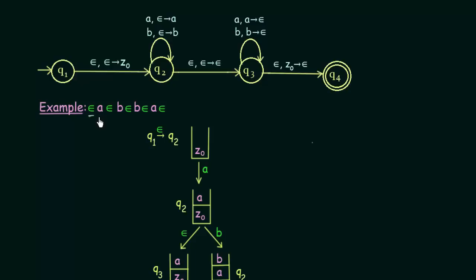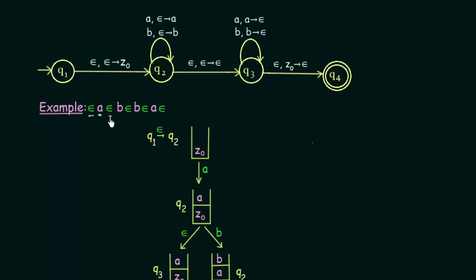The next input is A. In state Q2, if we get input A, we don't pop anything but just push A into the stack, remaining in Q2. After reading A, the next symbol could be either epsilon or B — our machine doesn't know which. We will consider both cases. First, let's see what happens if we read an epsilon. In Q2, reading epsilon means we go to Q3 without pushing or popping anything from the stack.